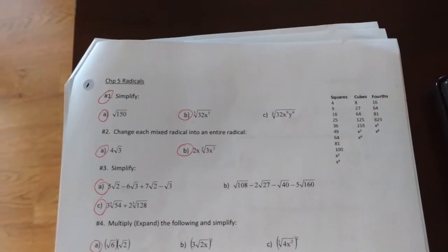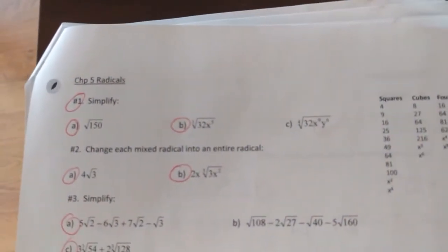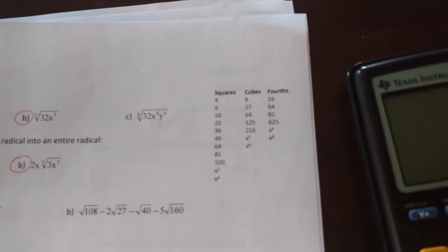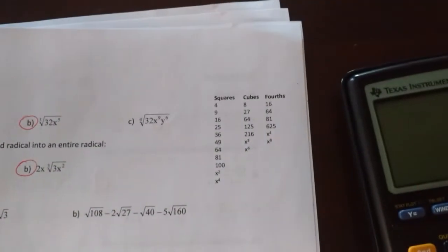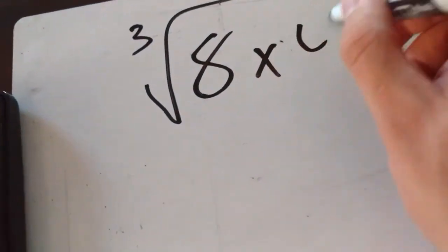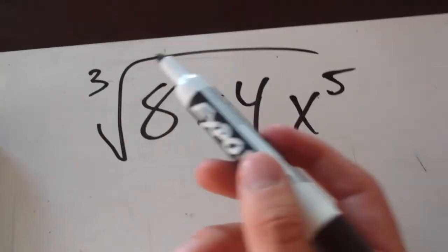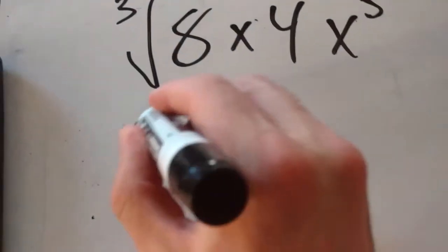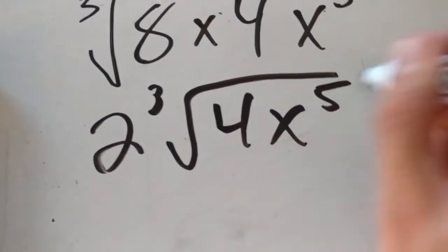For question 1, part B, we have the cube root of 32 times x to the power of 5. This time, instead of perfect squares, we use perfect cubes. The biggest perfect cube that goes into 32 is 8. So we write this as the cube root of 8 times 4, times x to the power of 5. We take the cube root of 8, which is 2, giving us 2 times the cube root of 4x to the power of 5.